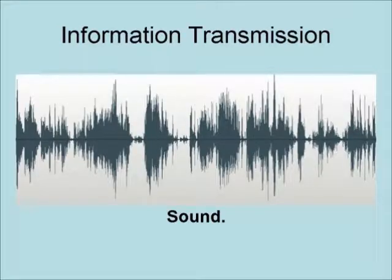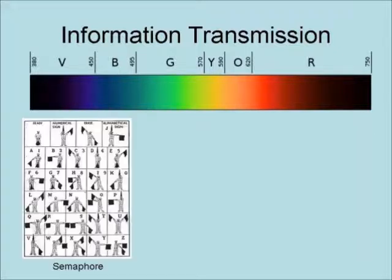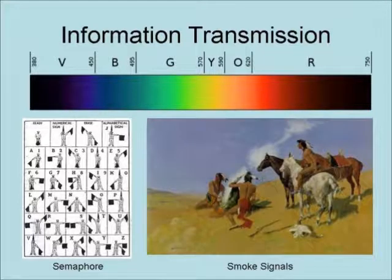There are various ways of transmitting information. The most common form of human transmission of information is sound. Information can also be transmitted visually, using visual observations of patterns to send information. The following are two well-known forms of visual transmission: semaphore, which uses flags moved in patterns to form an alphabet to send information, and smoke signals, which use smoke patterns to send information.